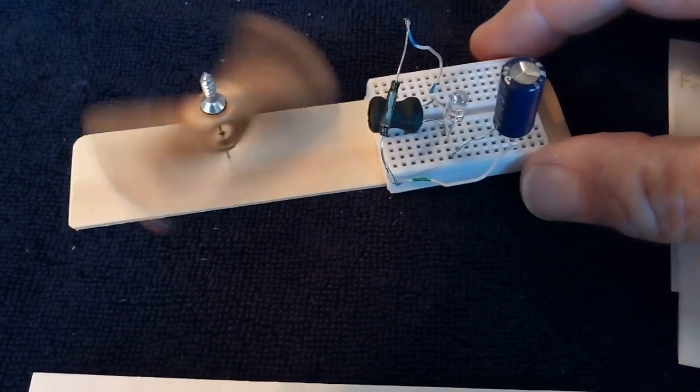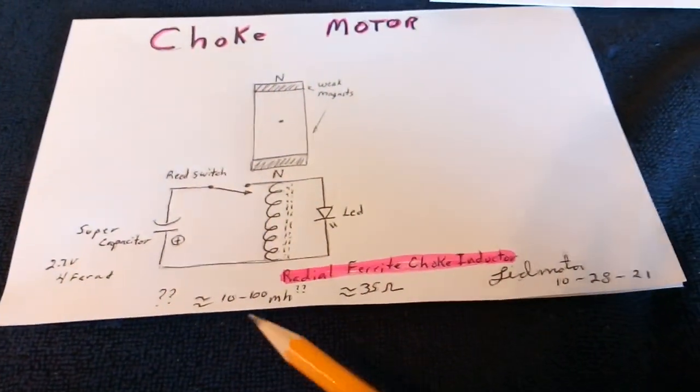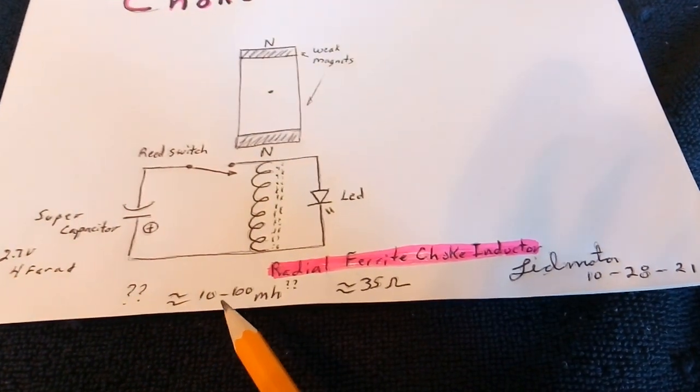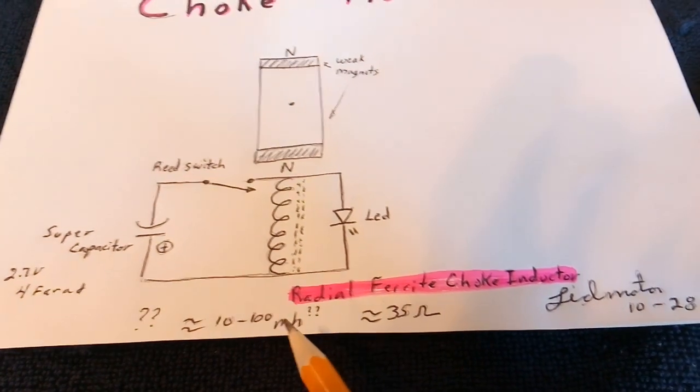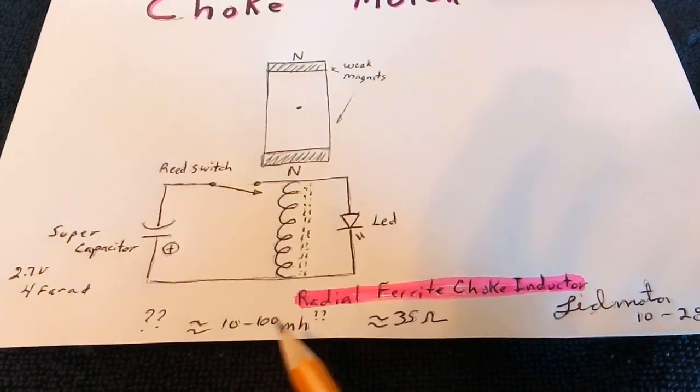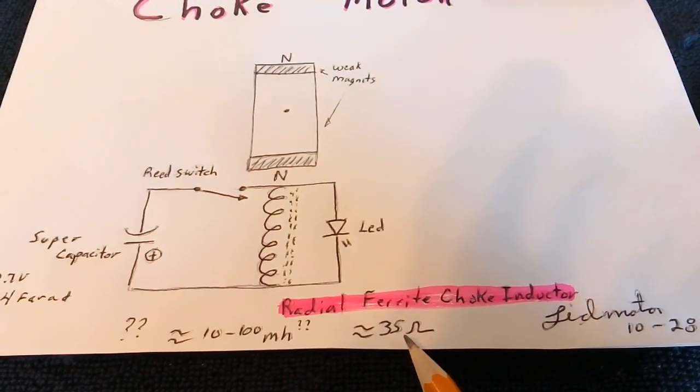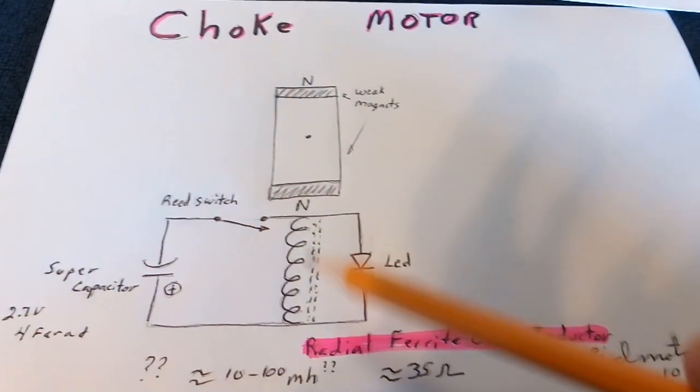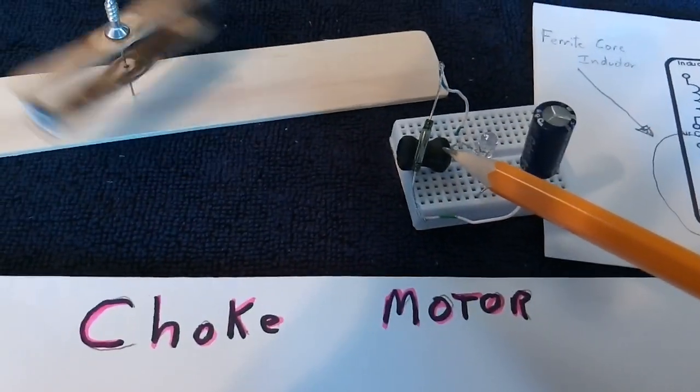So I'm thinking of maybe pursuing this ferrite choke in a bigger motor. But that's the basic circuit right there. Now the one I've got here, I believe it's 10 to 100 millihenries, which I think is 10,000 microhenries. I don't really know - I don't have an induction meter and I can't read the numbers on it. It measures about 35 ohms.